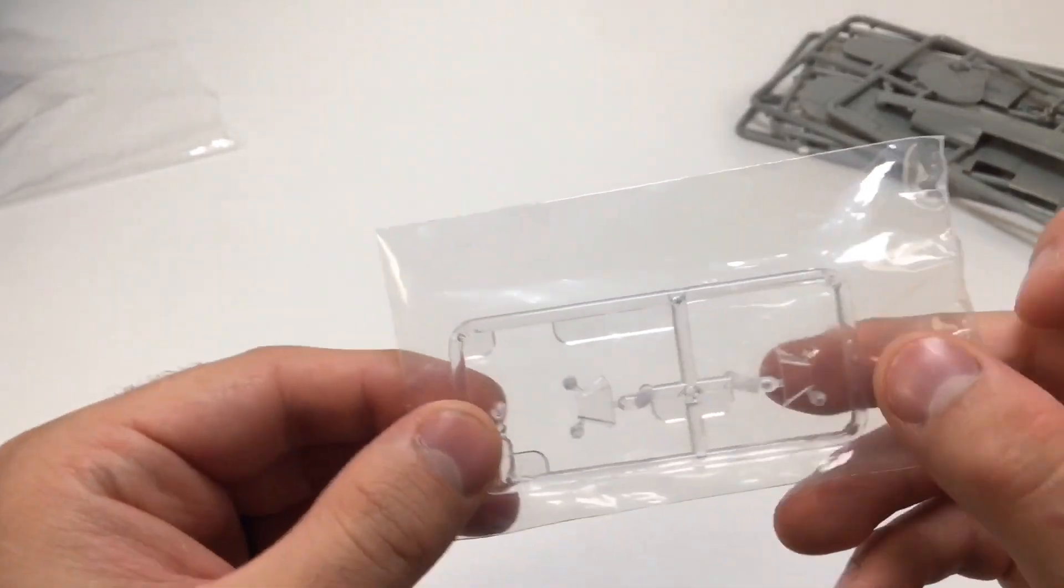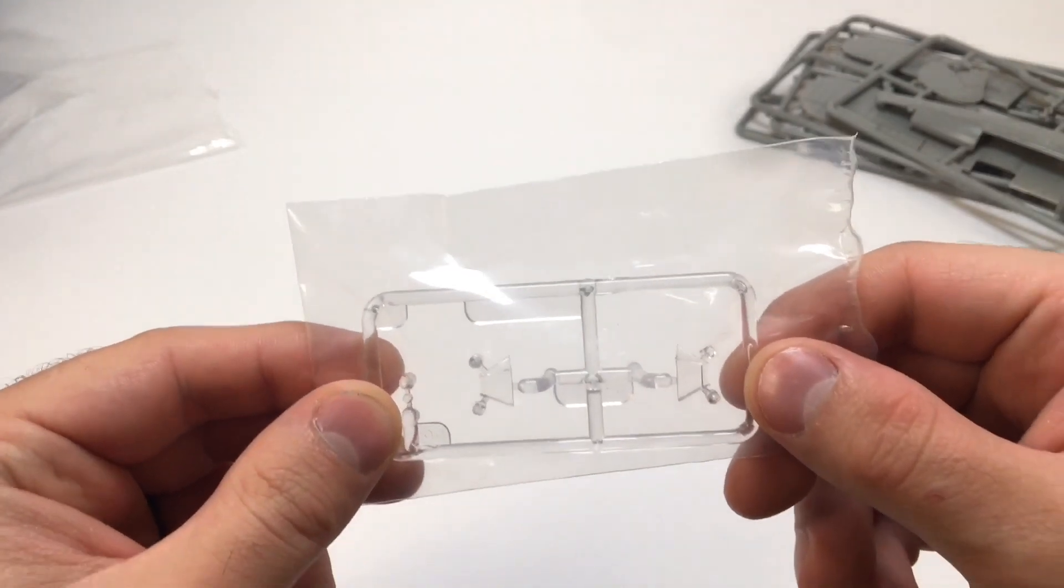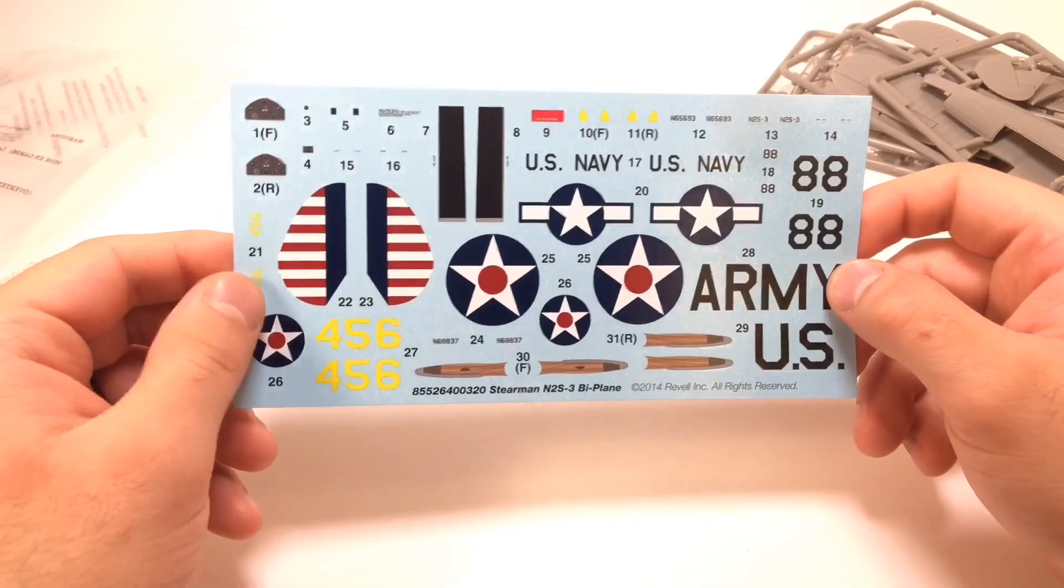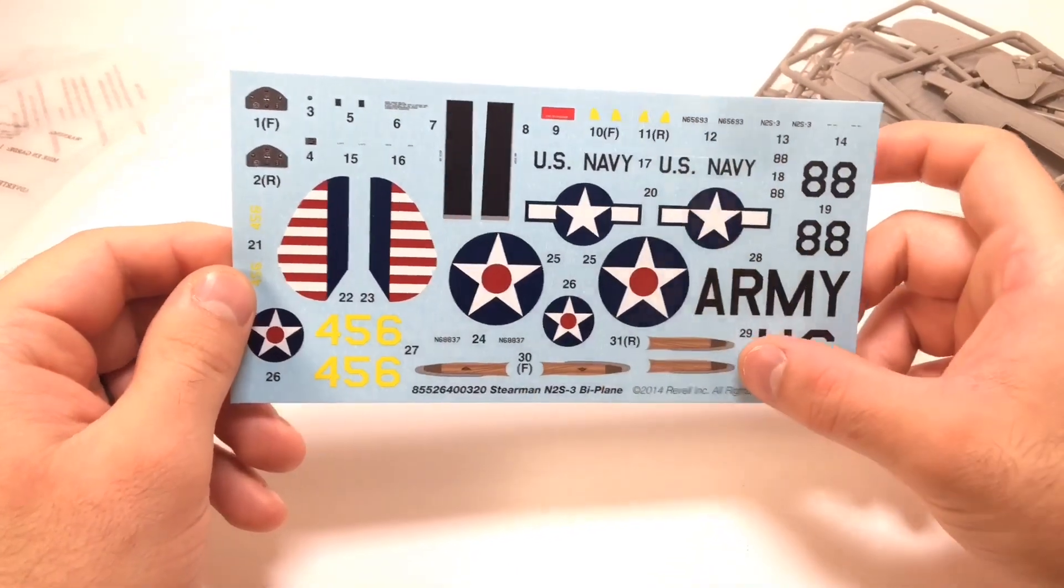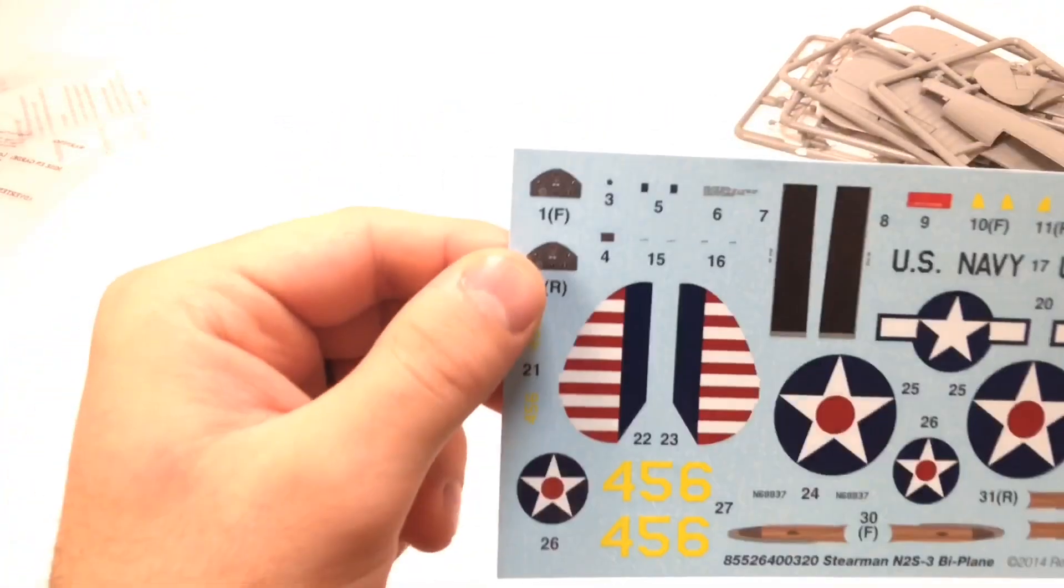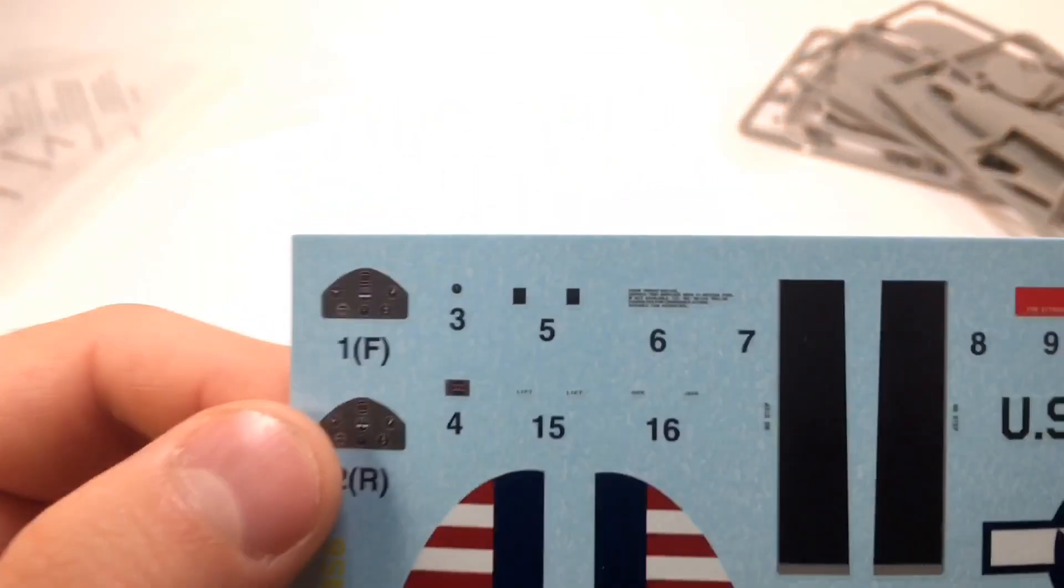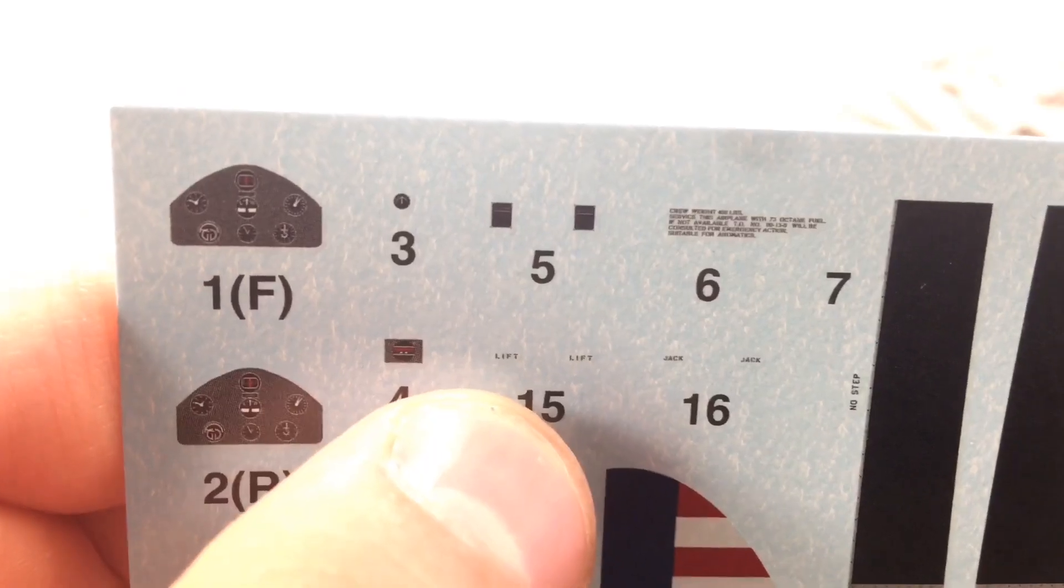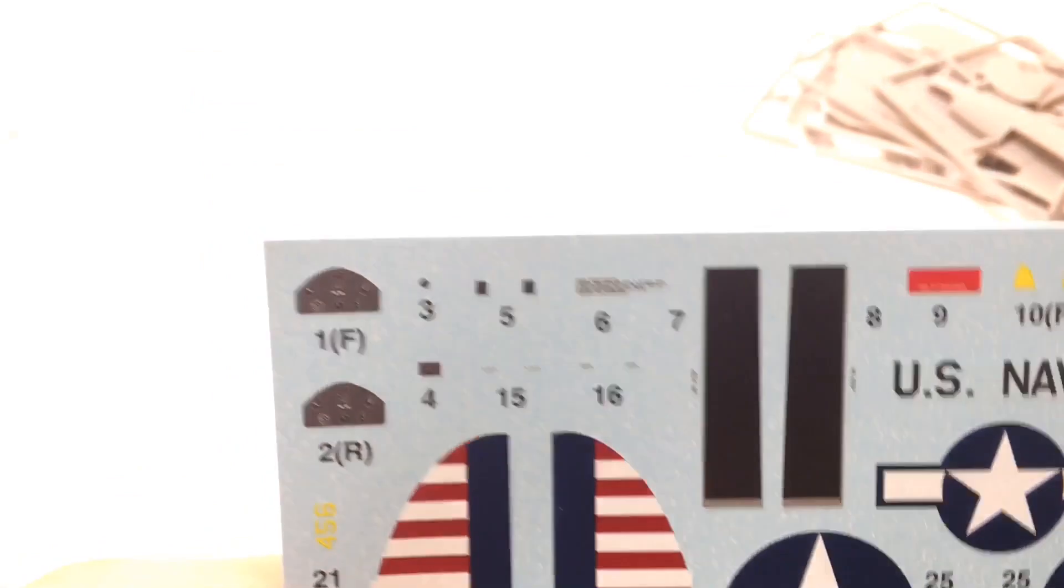There's also the clear parts. I'm not going to take it out of the package because it's going to get scratched up, but you can see the decals. Got the army, looks like the wood for the propeller. Got all different sorts of stuff, instrument panels, lift jacks. So there's some tiny, tiny stuff. I can't even really see this.